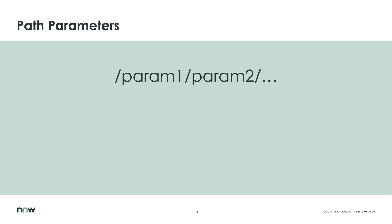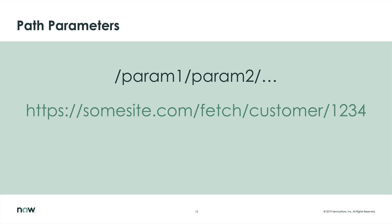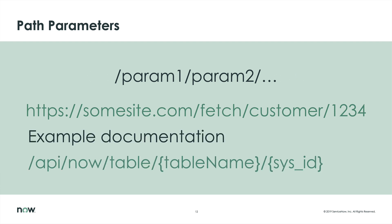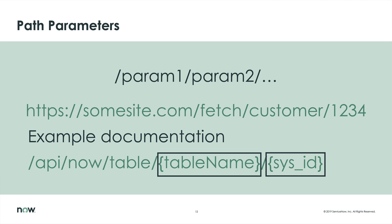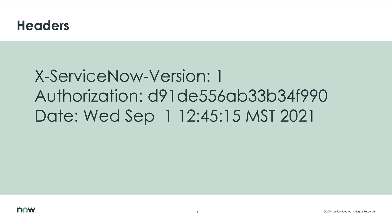Another common one is path parameters. These appear as part of the endpoint itself. They are not optional and order is very important. The docs for such a path parameter might look something like this, telling us that the table API needs a table name followed by a sys ID. Header parameters are sent as part of the HTTP request itself and are commonly used for passing authentication information such as an authorization token, although you may see tokens and keys sent as query parameters too.